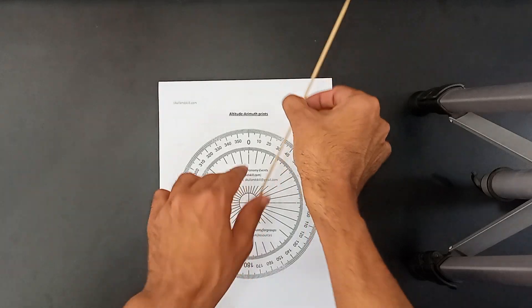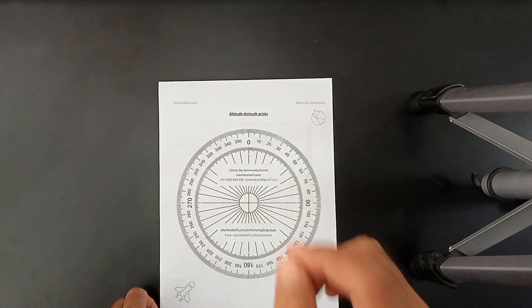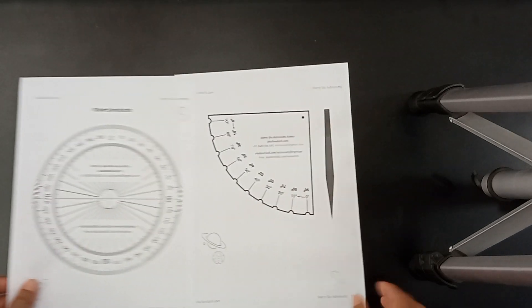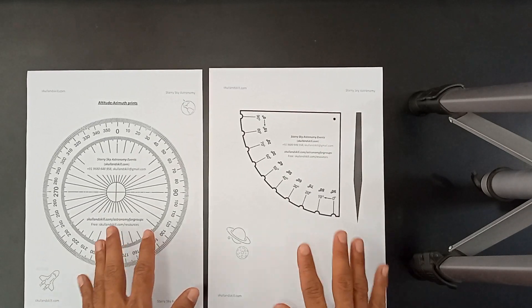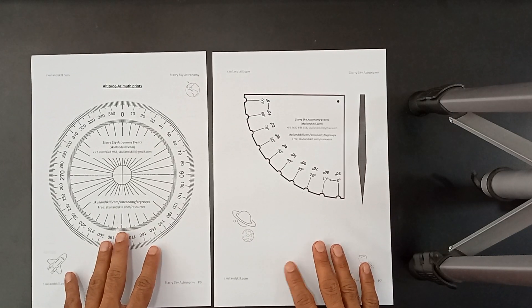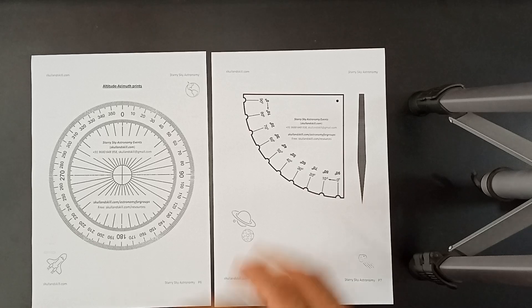In this video, we're going to teach you how to make that azimuth altitude angle measuring tool. Firstly, go to our website skullandskill.com, go to astronomy pages. There you can find buttons to download these prints from.